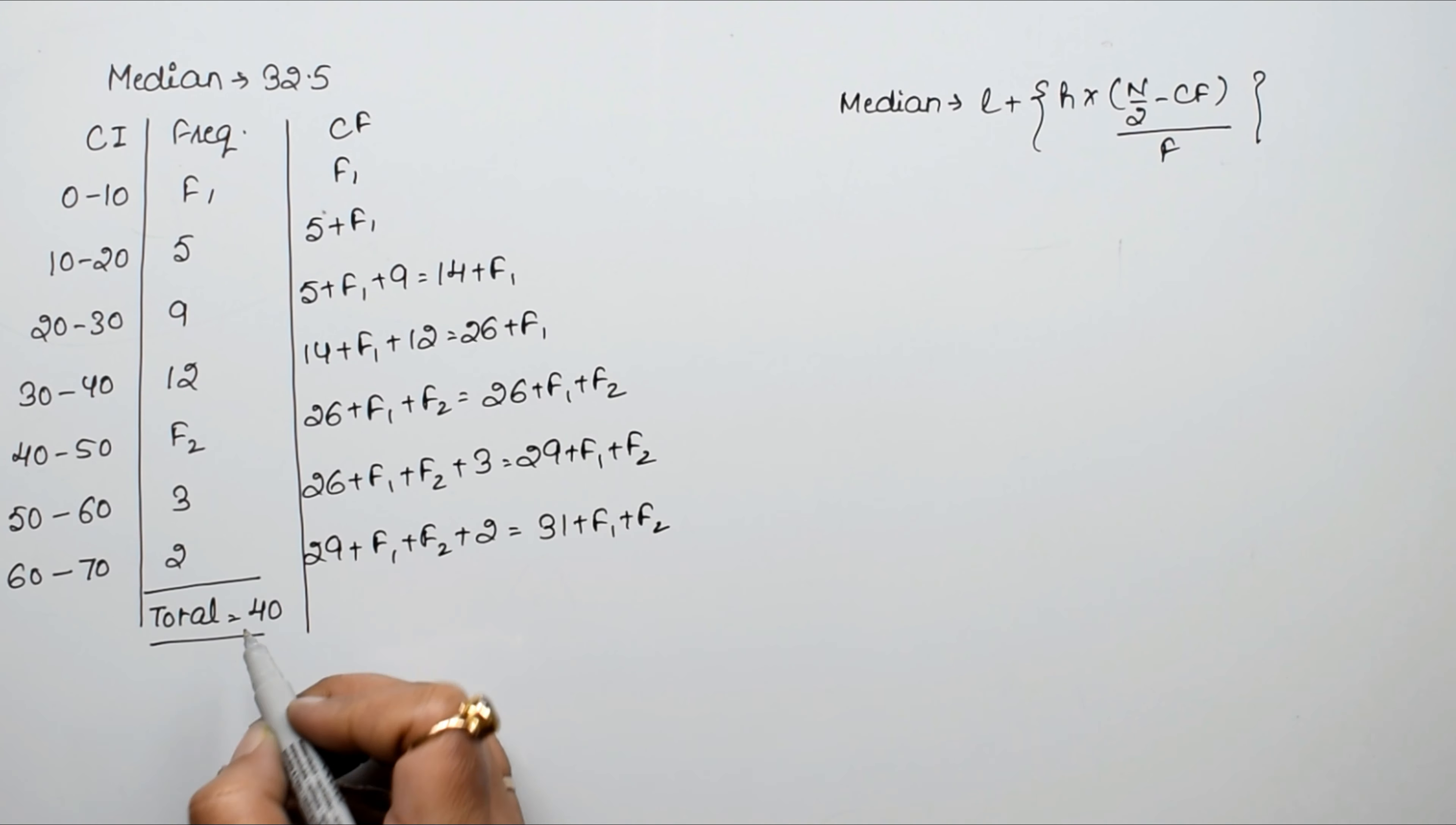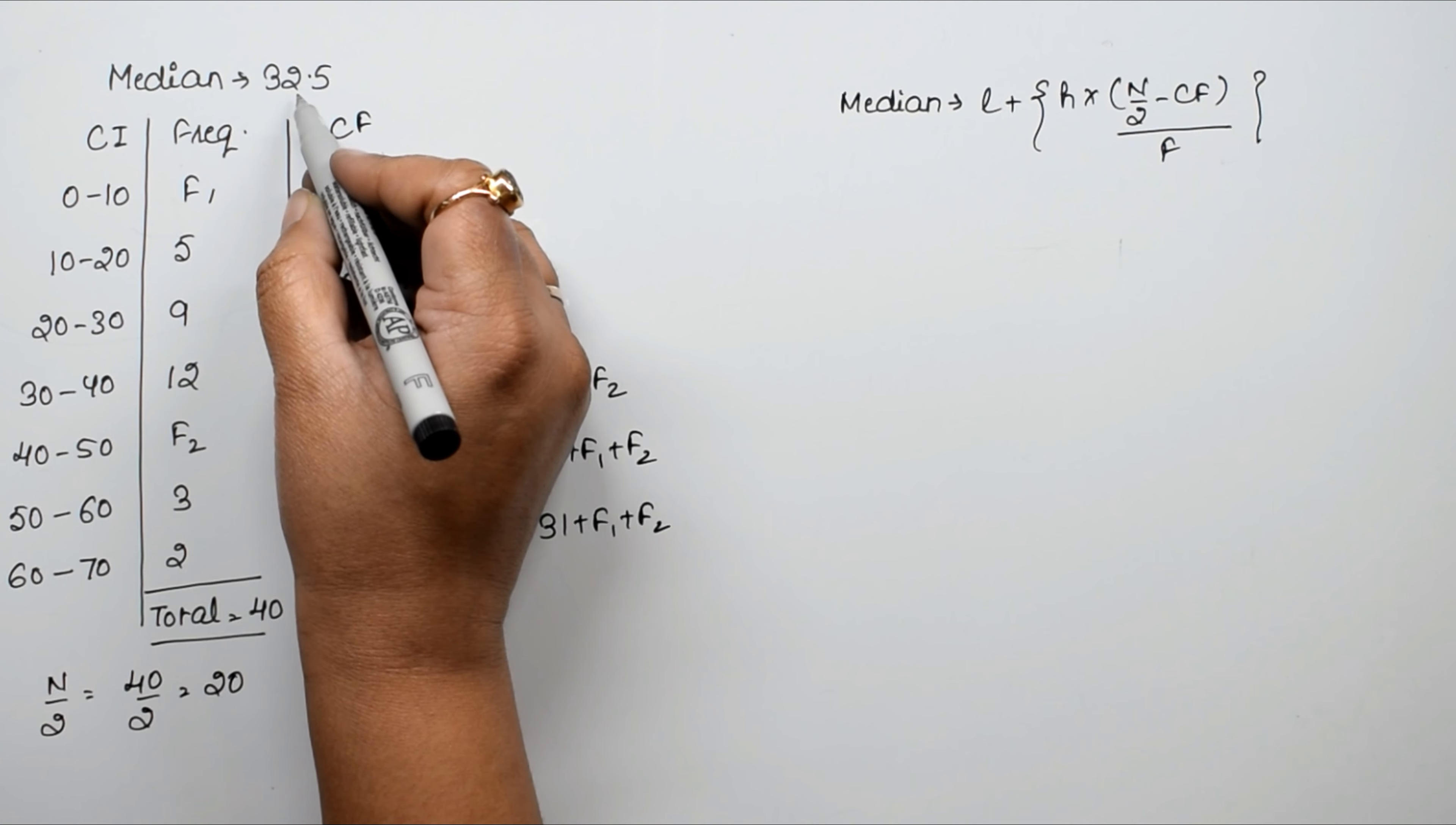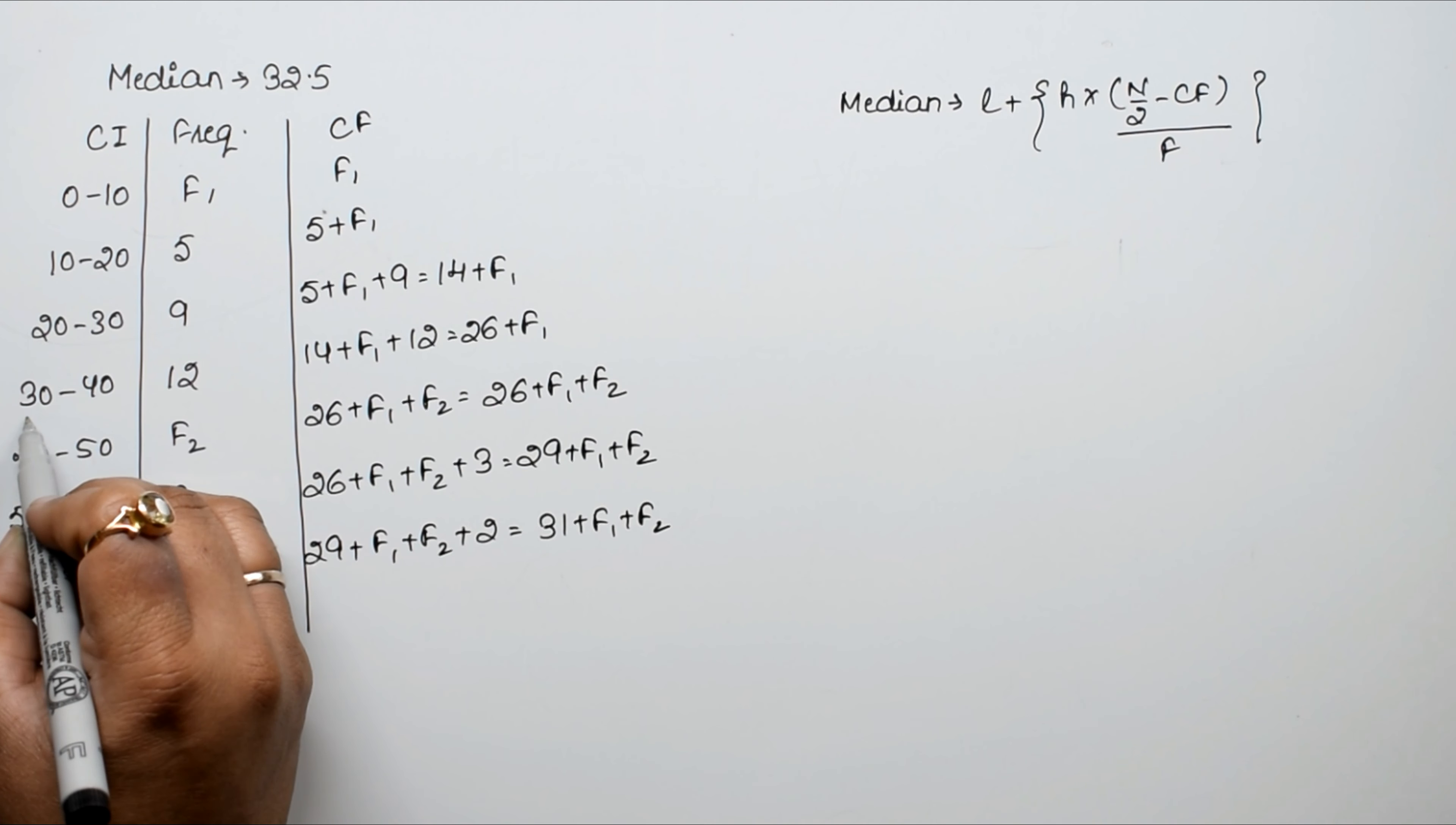We already have N equals 40, so N by 2 equals 40 divided by 2, that is 20. Now we know the median is 32.5, so we put 32.5 here.